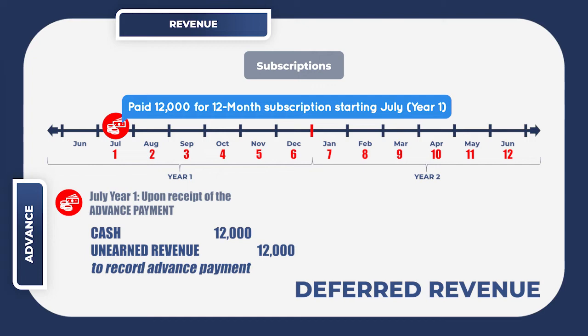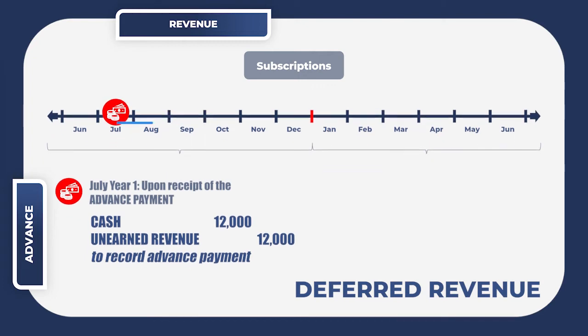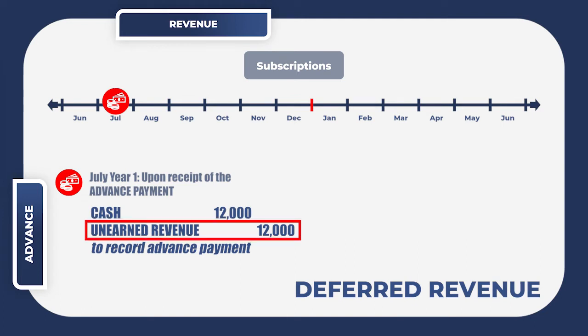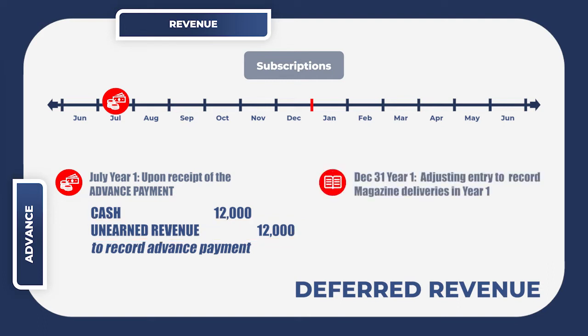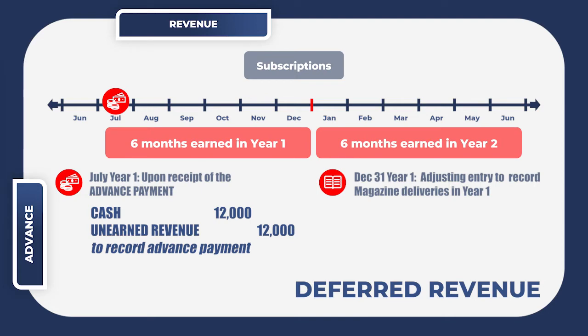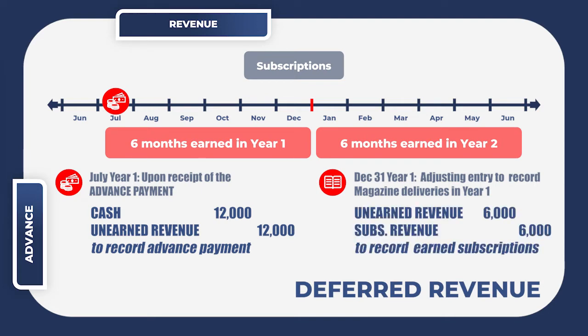Both accounts go to the balance sheet because under the accrual basis we only recognize amounts in the income statement when the income is earned — in this case, when the magazines are actually delivered. By the end of the year you need to determine the portion of unearned revenue that can go to the income statement by checking how much was delivered. For example, if the one-year subscription was paid on July 1 for subscriptions starting July, then 50% of the amount has been earned. You then debit unearned revenue to reduce it by half and credit subscriptions revenue — only then will an amount go to the income statement.